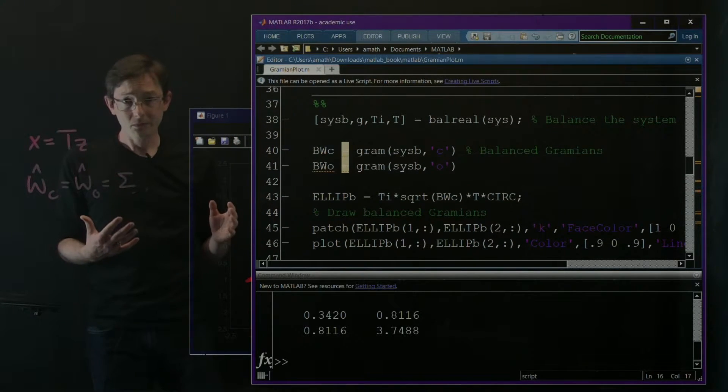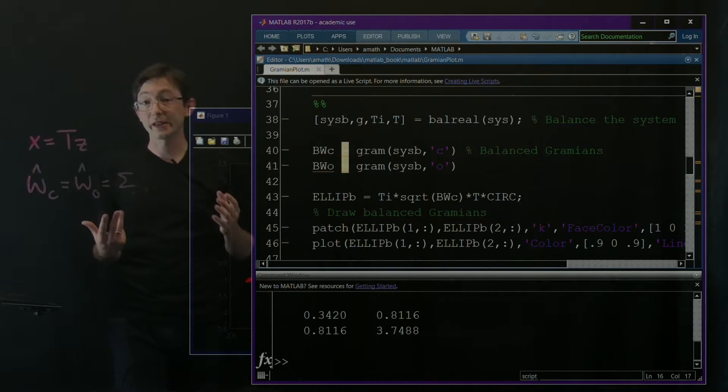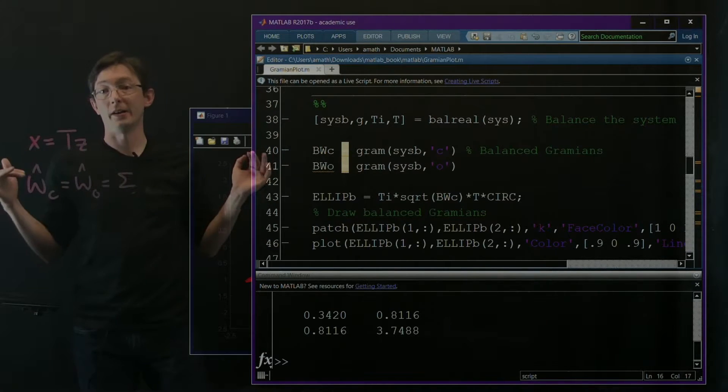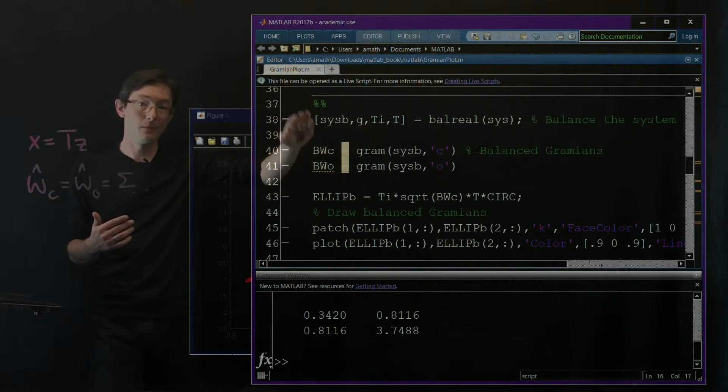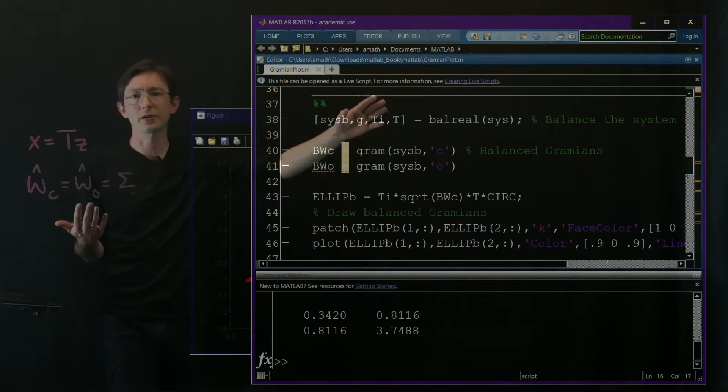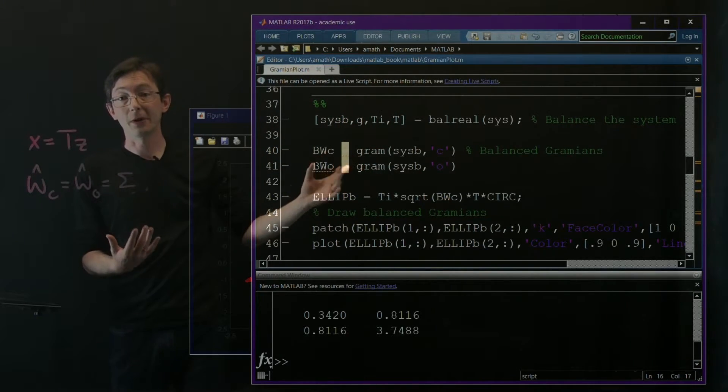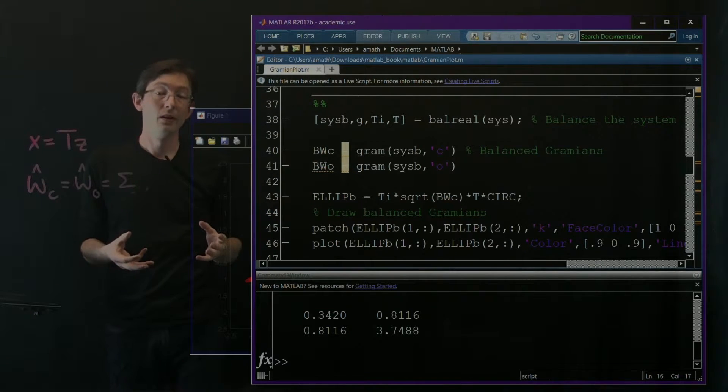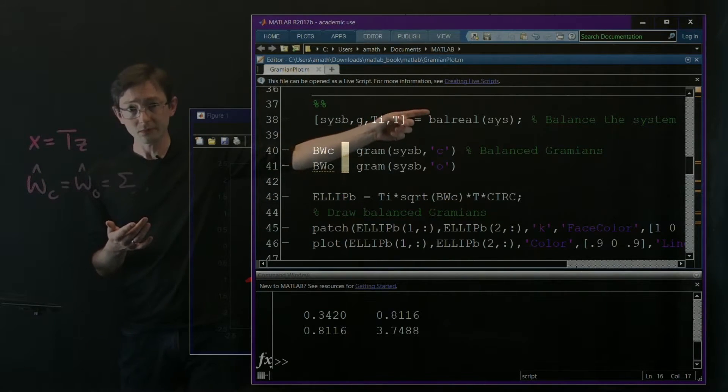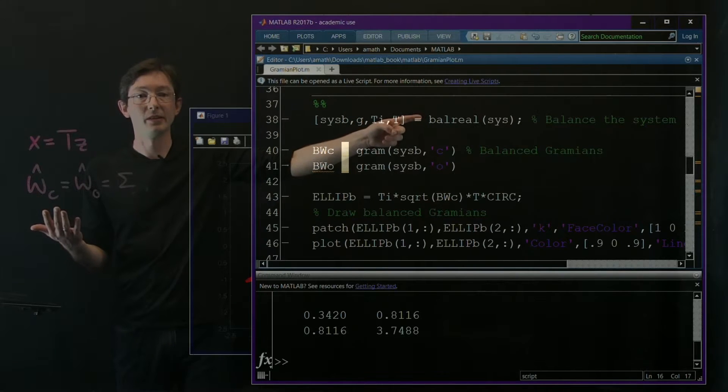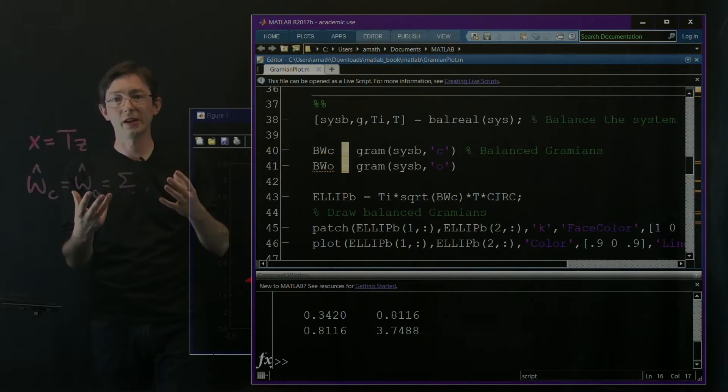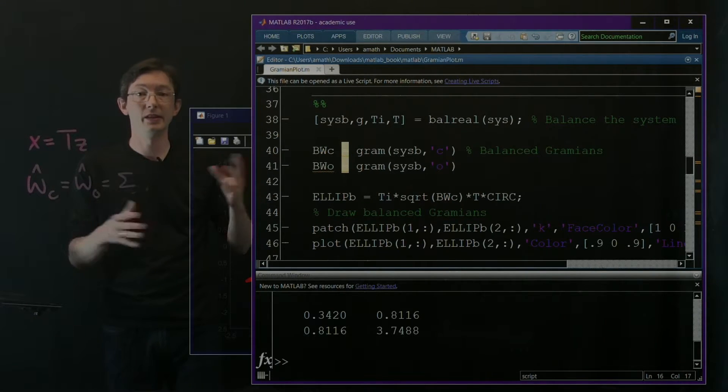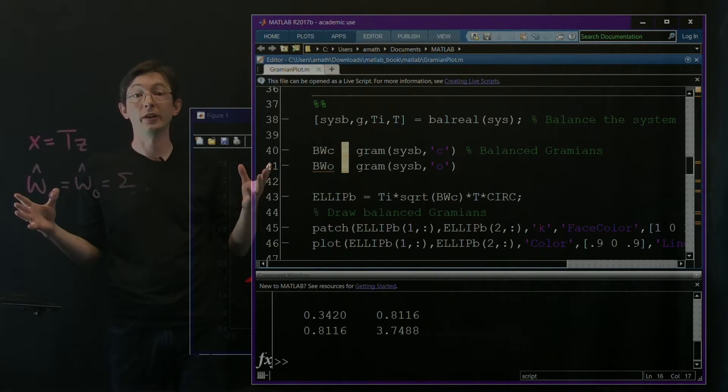So the great thing about MATLAB is that computing these balancing transformations is one line. This is super simple. I think one of the great things about this is that MATLAB's, I think this is maybe the robust control toolbox or maybe the original control toolbox, essentially wraps Fortran code, I think written by Peter Benner in the 80s, if I'm not mistaken, called Slycott. And essentially it wraps this super powerful Fortran code that does all of this numerical linear algebra, even for pretty large systems.